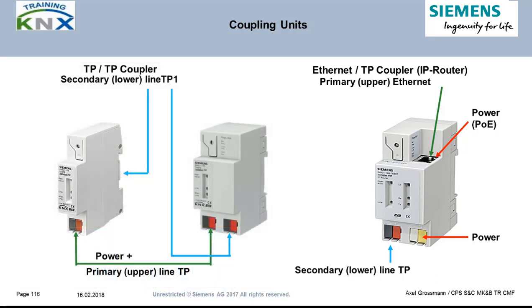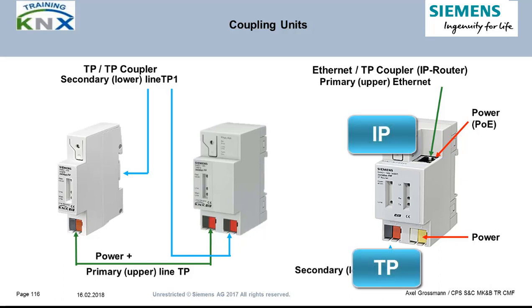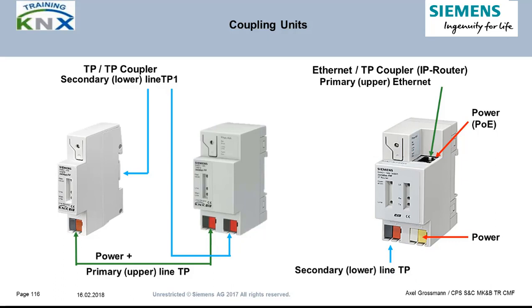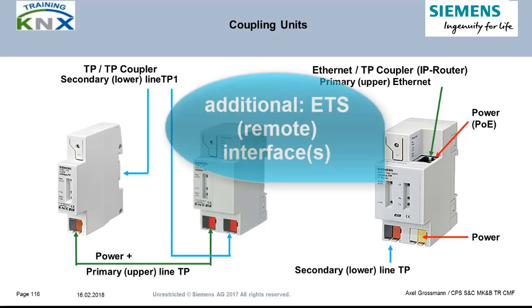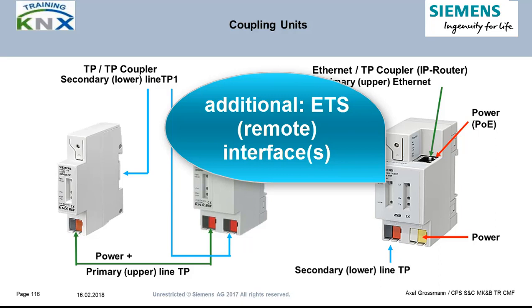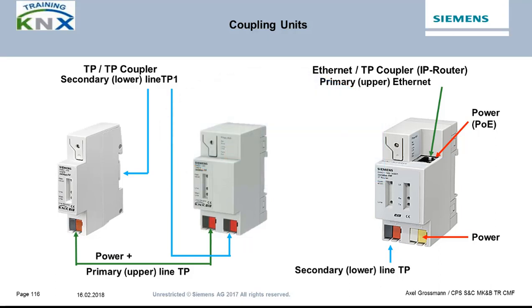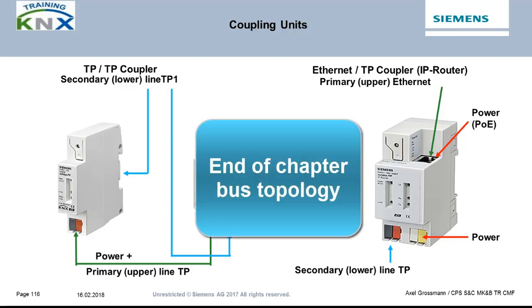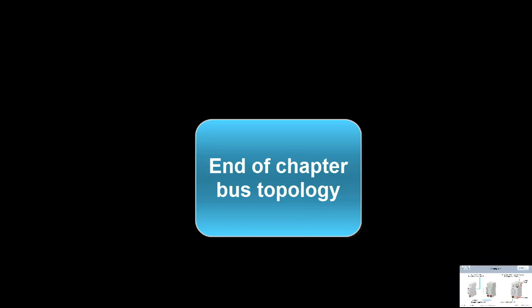The bus devices used to interconnect bus lines depend on the medium of the backbone. Classic twisted pair couplers are available in one space unit wide — with secondary line connection on the rear as data rail contacts — or two space units wide with both bus terminals on the front. On the right side we see an IP router, whose distinction from a line coupler is the primary side — connected to Ethernet — offering a much bigger data rate. It provides the same filtering functions as the twisted pair coupler, and additionally offers a virtual interface to the KNX, for example for use with ETS.